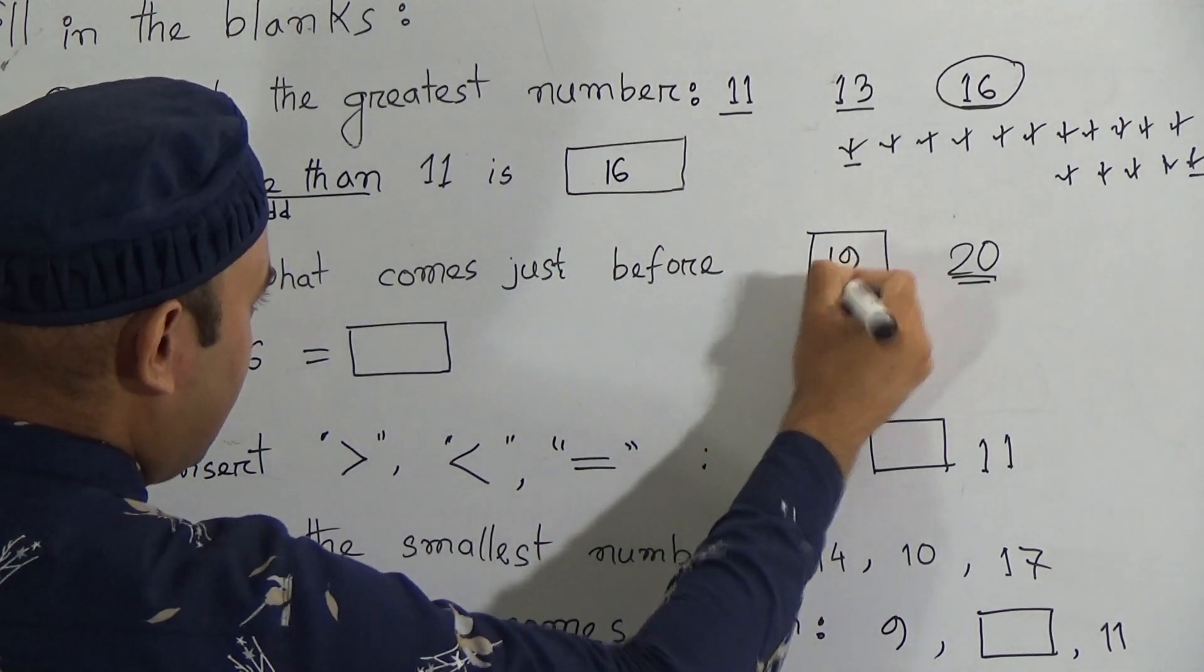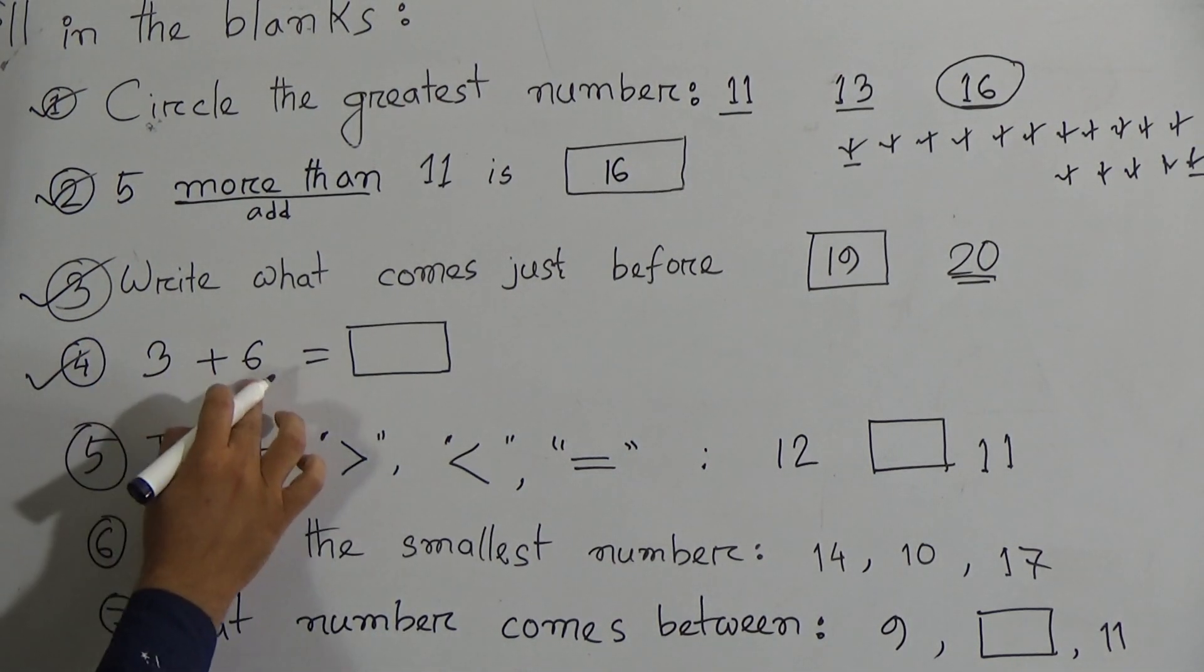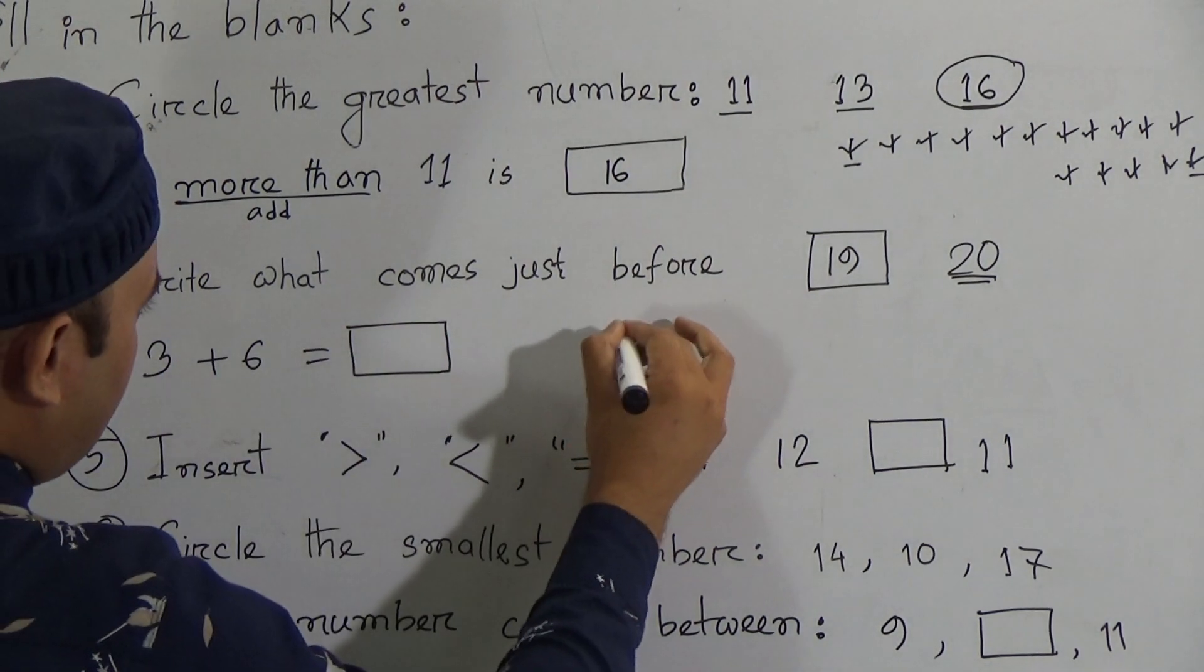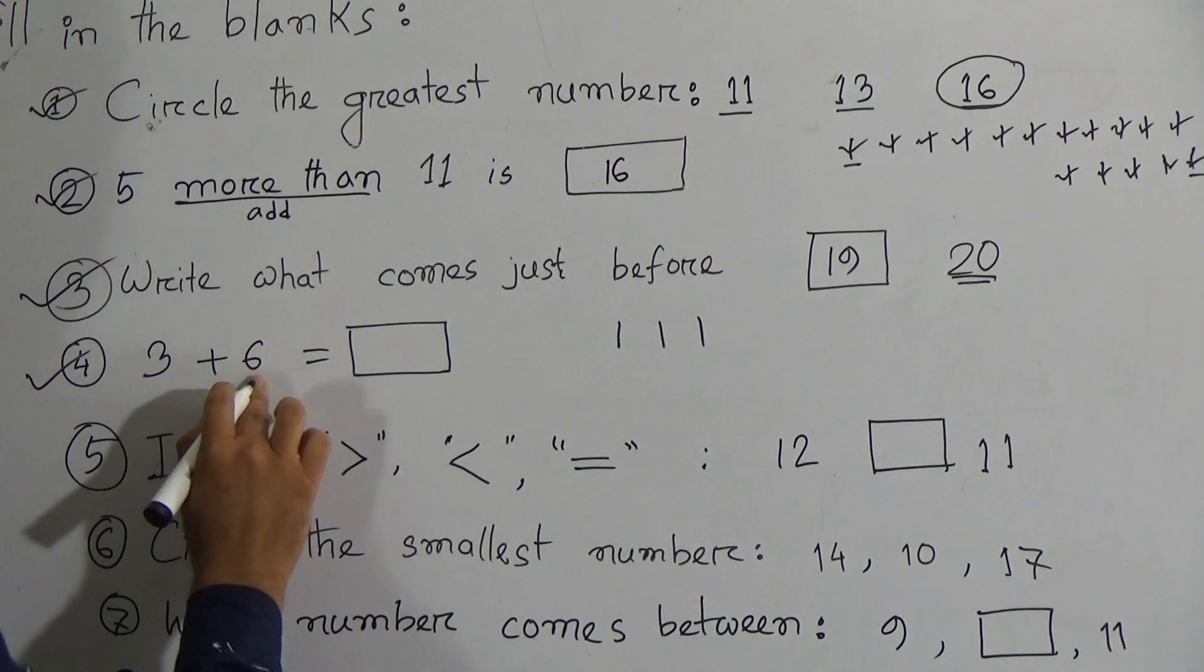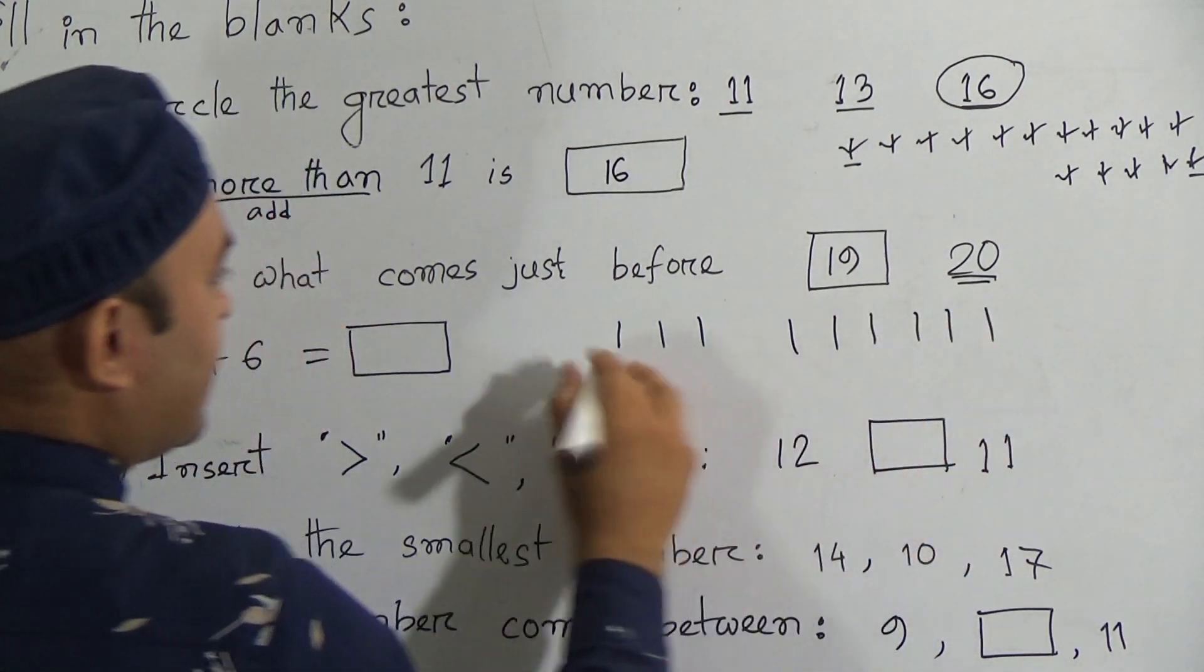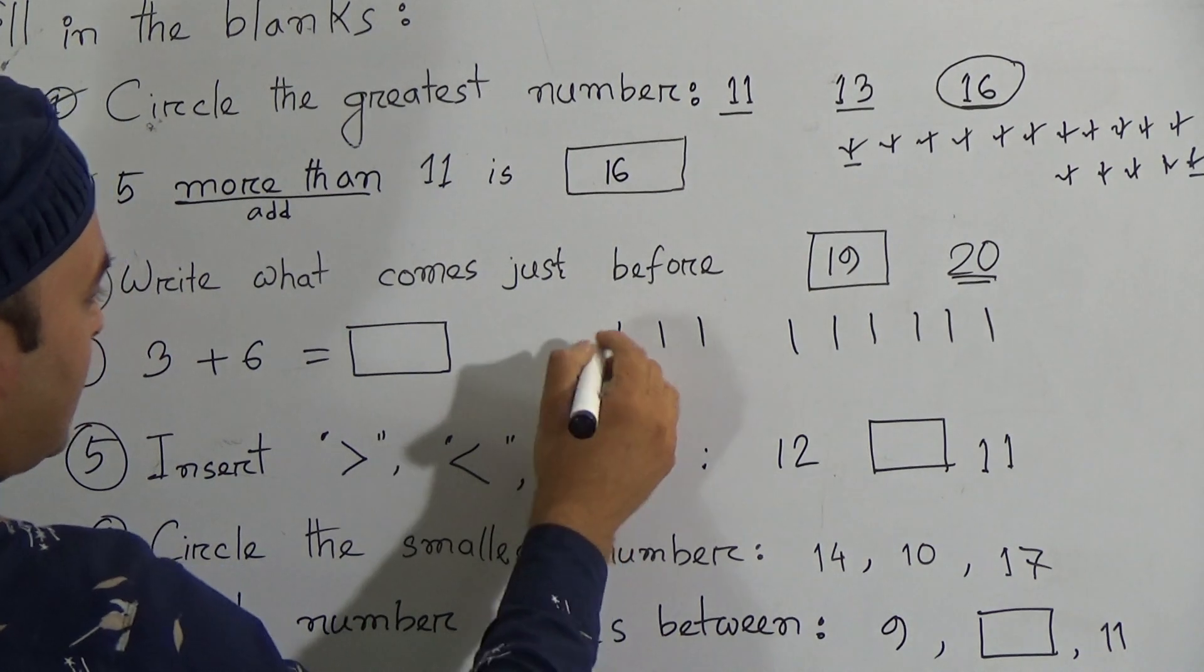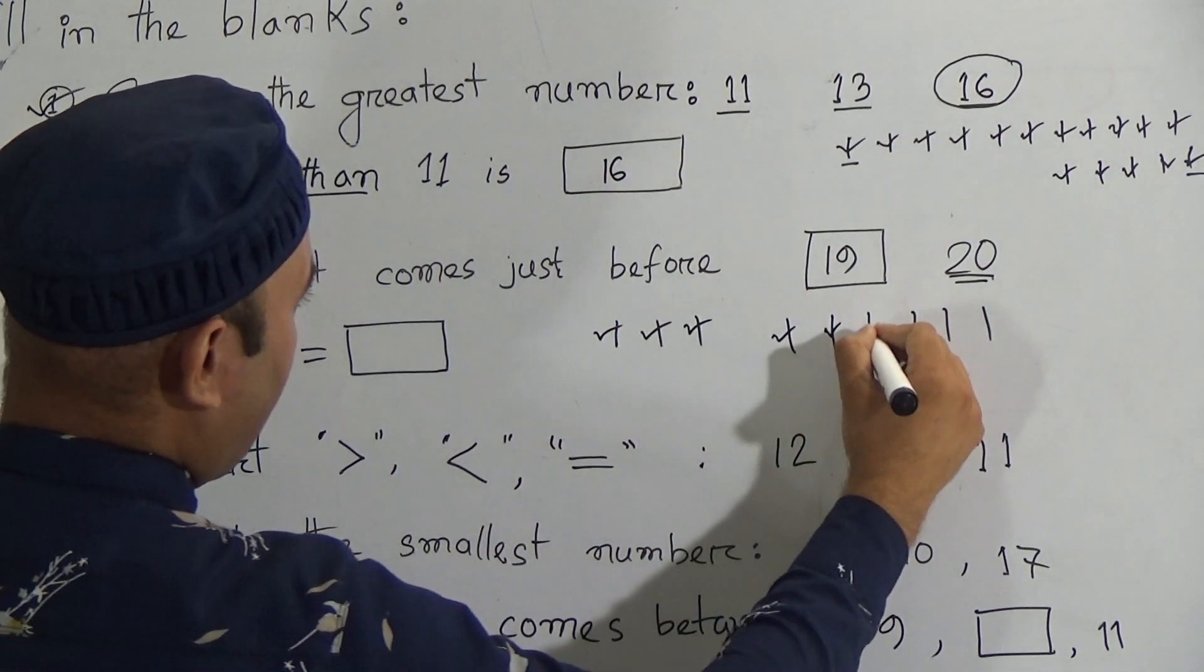It will be nineteen. Now next one: three plus six. Again, let us consider there are three sticks: one, two, three. There are three sticks. One, two, three sticks. One, two, three, four, five, six.